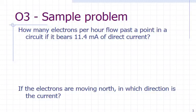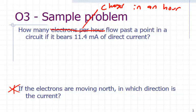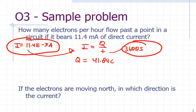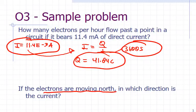How many electrons per hour flow past a point in a circuit if it bears 11.4 milliamps of direct current? For the current, we need to convert to amps, we've got our time in seconds, and it'll be 41 coulombs passing through. And if the electrons are moving north, the current would therefore be moving south. Remember, current is the flow of positive charge, even though really the electrons are going the other way.